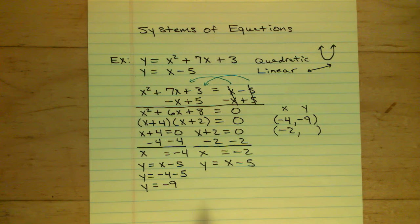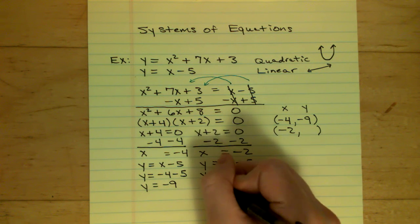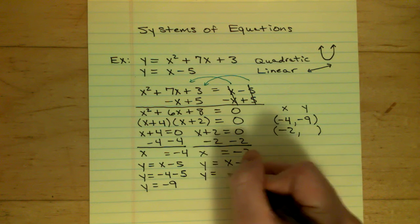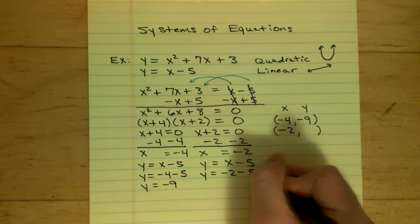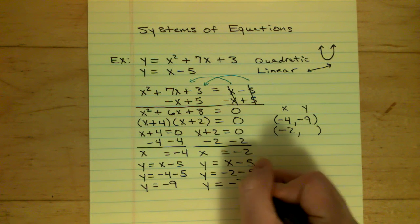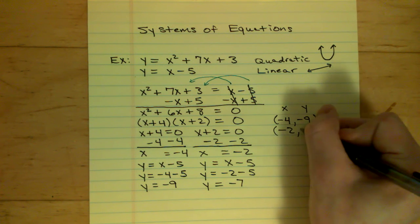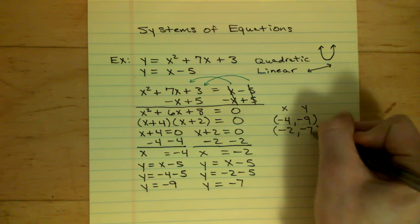Now for this one, x is negative 2. So I plug in negative 2 for x and get negative 2 minus 5, which is negative 7. So the y value for that x value is negative 7, and I just plug it back in.